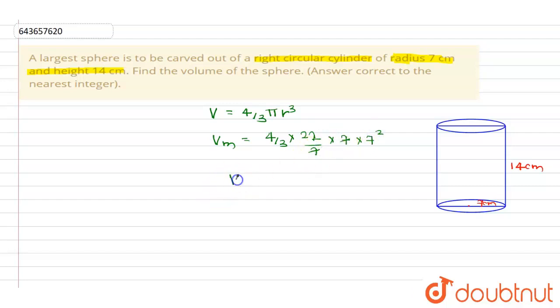Therefore, volume max is equal to 88 divided by 3 into 49, which is equal to volume maximum equal to 1437.33. But they have asked to correct to the nearest integer, which is 1437.